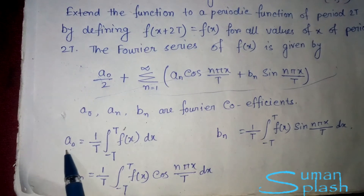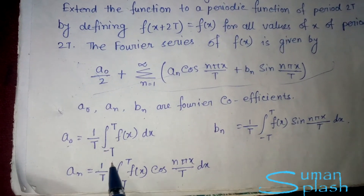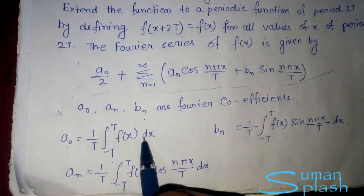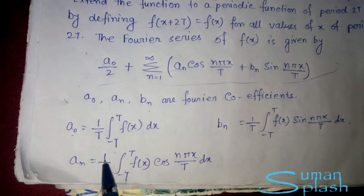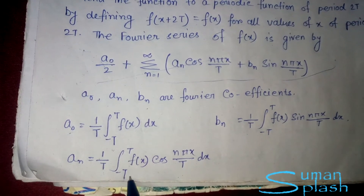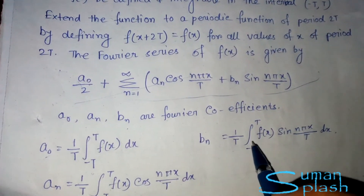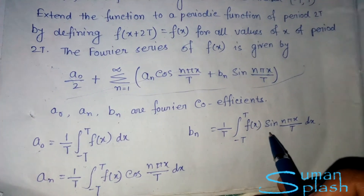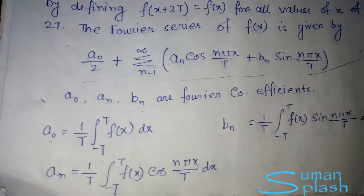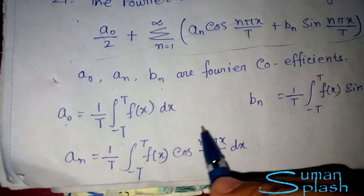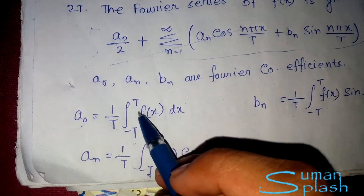The formula for a₀ is: a₀ = (1/t) times the integral from −t to t of f(x) dx. The formula for aₙ is: aₙ = (1/t) times the integral from −t to t of f(x) cos(nπx/t) dx. The formula for bₙ is: bₙ = (1/t) times the integral from −t to t of f(x) sin(nπx/t) dx.